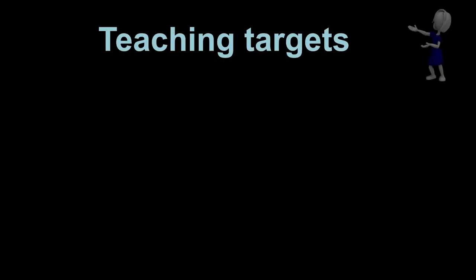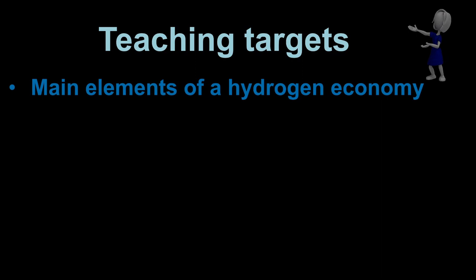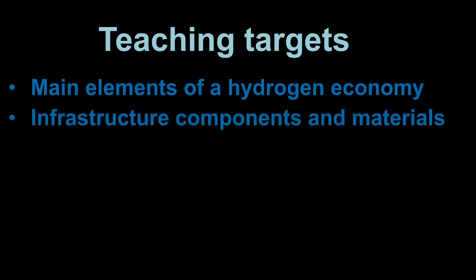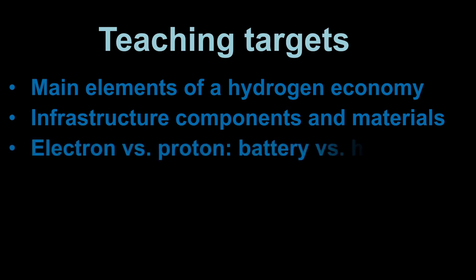At the end of this class, you will be able to explain the following items: the main elements of an economy that uses hydrogen as an energy carrier, such as production, transport, and use; the required infrastructure components such as tanks, valves, or tubes and the materials needed to make them; and a few pros and cons about electrons and protons as energy carriers.